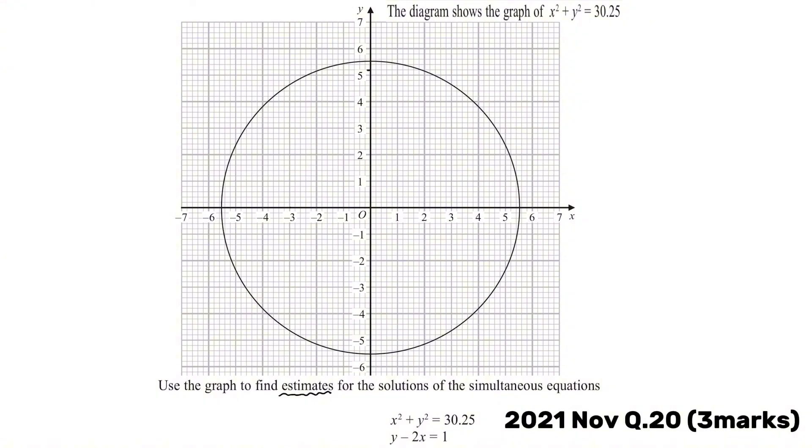In this question, we're given the graph of x squared plus y squared equals 30.25, which is just a circle. We're asked to find the estimates for the solution of these two simultaneous equations: x squared plus y squared equals 30.25 and y minus 2x equals 1. One thing you need to know is that when you're solving simultaneous equations, you're essentially finding the point where the two equations meet each other.